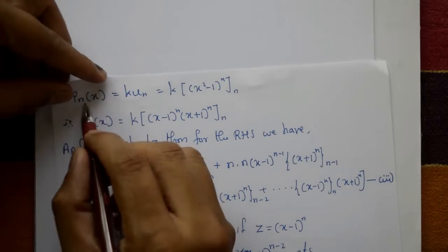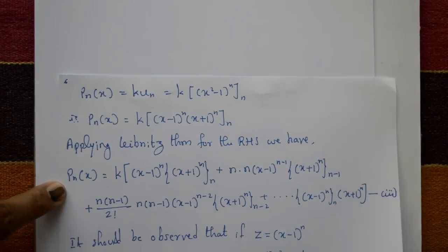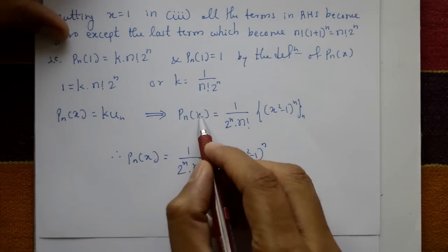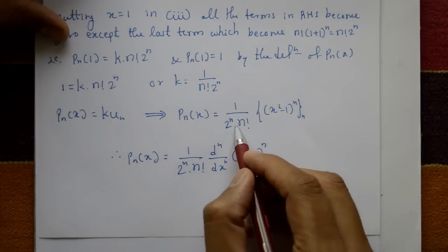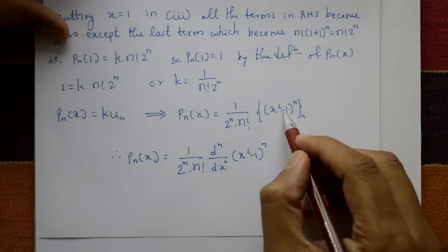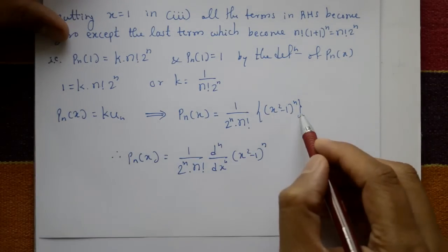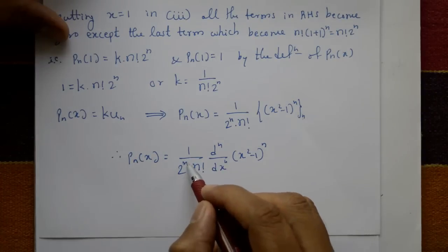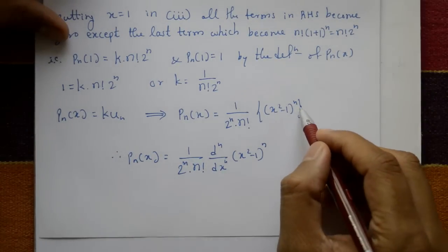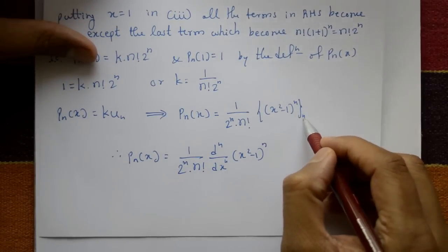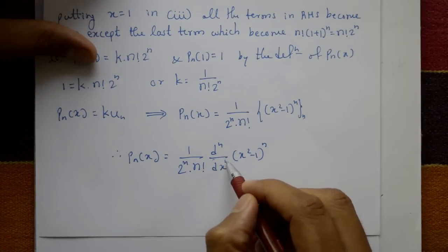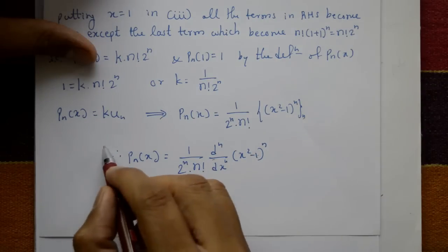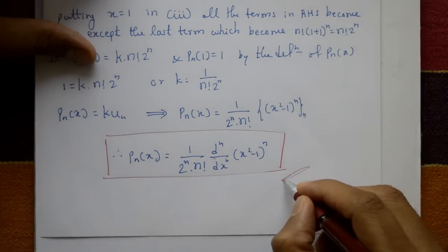Now substituting back: P_n(x) = k · u_n, where k = 1/(2^n · n!) and u_n = d^n/dx^n of (x² - 1)^n. Therefore P_n(x) = 1/(2^n · n!) · d^n/dx^n [(x² - 1)^n]. This is the required Rodrigues' formula.